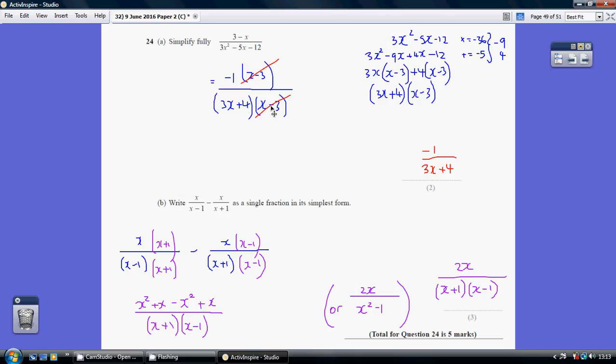Now, because I need to be able to cancel something in the numerator and denominator, I've chosen to take -1 out of the numerator. So I've effectively factorized this, taking out -1(x-3).